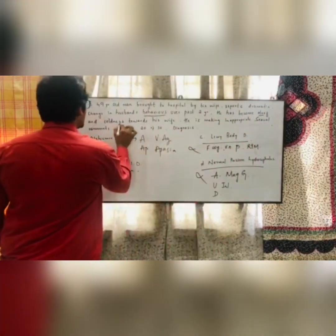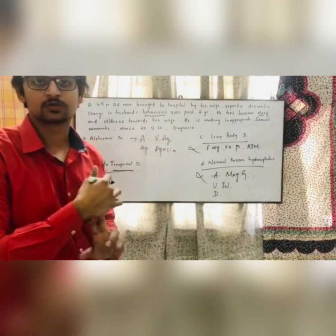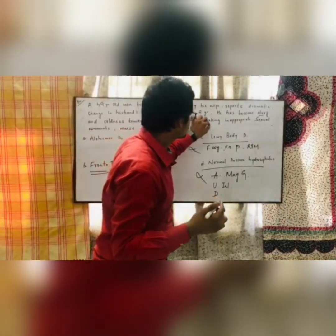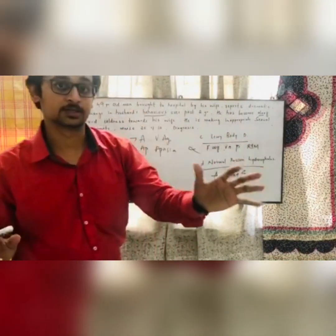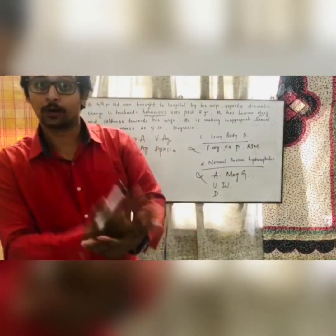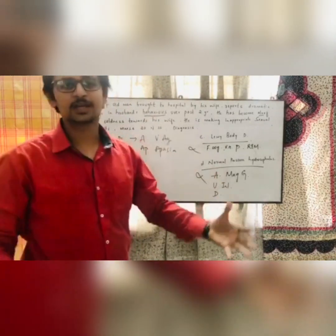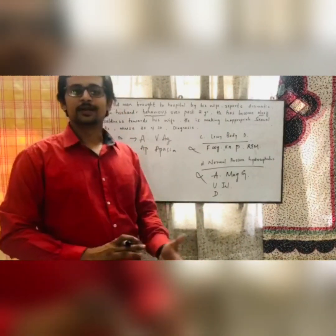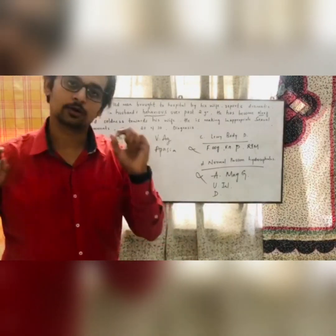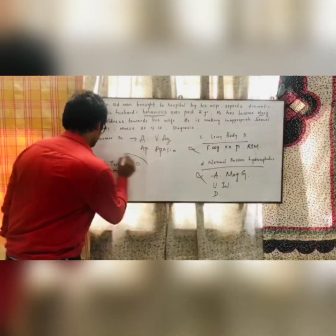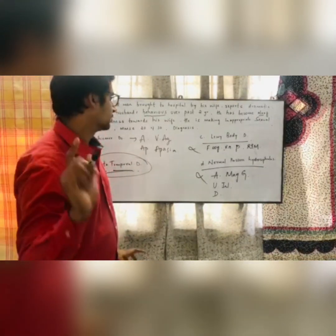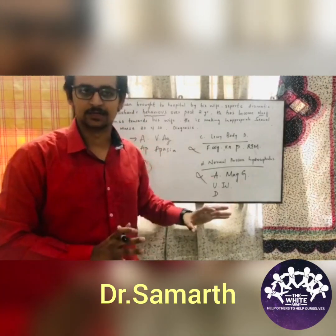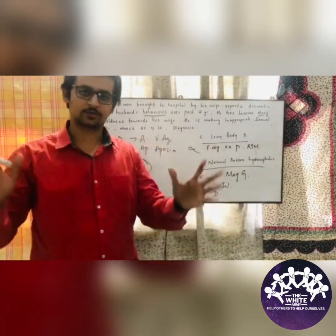The question describes emotional coldness towards his wife, loss of empathy, inappropriate sexual comments, hypersexuality, and compulsive behaviors like going to the bathroom frequently. These are all frontal lobe behavioral changes and compulsive psychiatric-like problems that occur specifically in Frontotemporal dementia. By ruling out the other options, you arrive at the correct answer: Frontotemporal dementia.